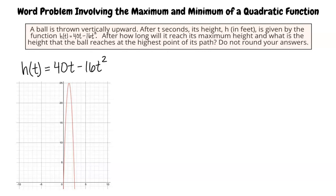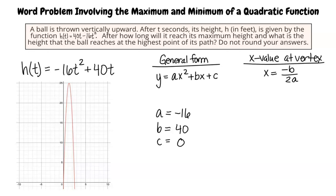Looking at the exponents, I believe the standard form will be h of t equals negative 16t squared plus 40t. That's correct. Now we will compare the general form of a quadratic function with our function h equals negative 16t squared plus 40t. What are the a, b, and c coefficients in our problem? Following the general form for the function listed, a would be negative 16, b would be 40, and c would be 0. Exactly.